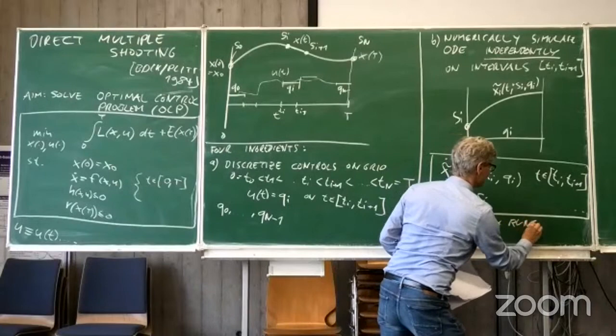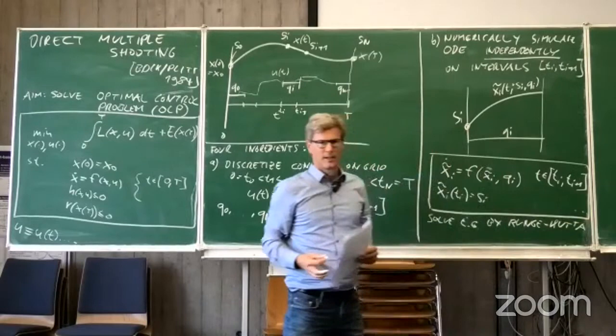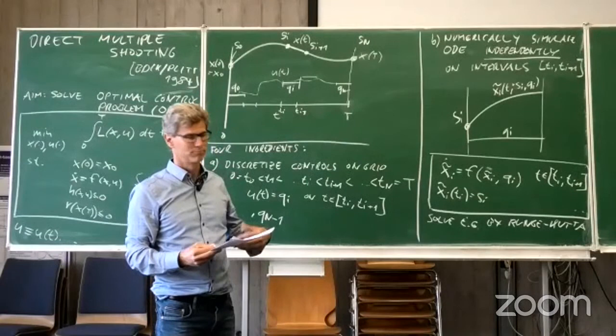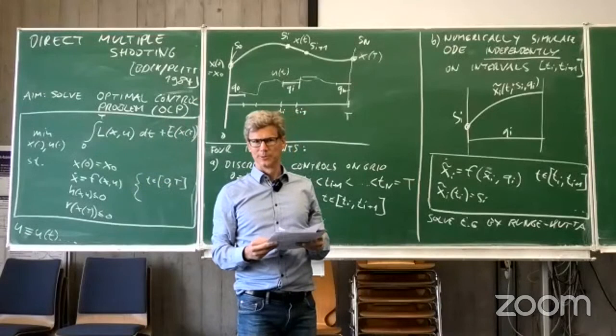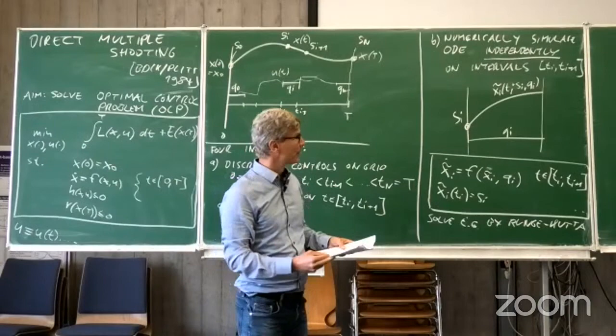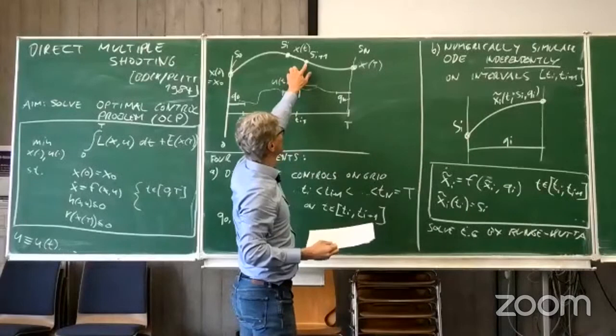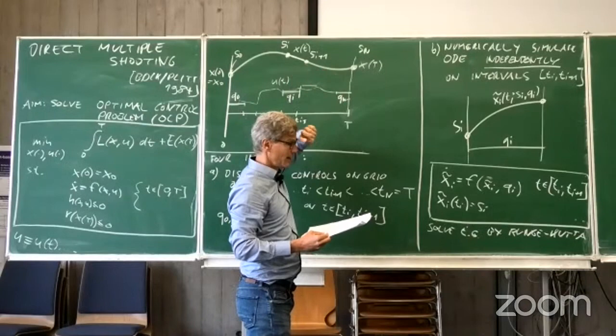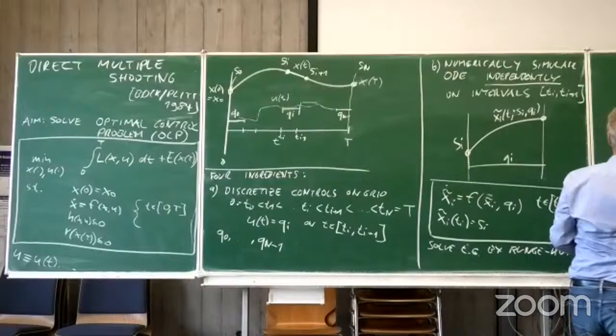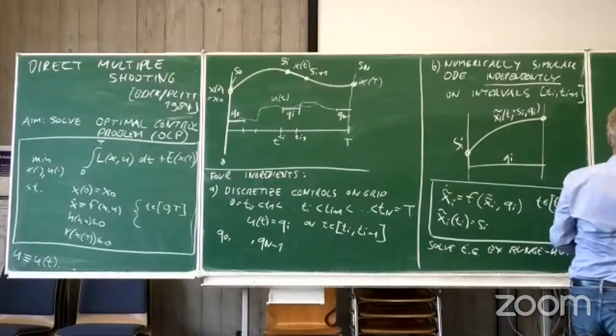As a side remark, when simulating these trajectory pieces we also obtain the integrals of the objective, which we call Lᵢ, as a function of sᵢ and qᵢ. These are accumulated to form the overall objective value in the resulting finite-dimensional nonlinear program.